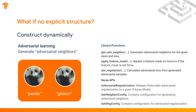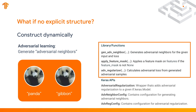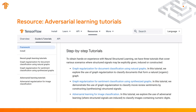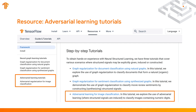In the Neural Structure Learning framework, there are a TensorFlow library and functions that you can use to generate adversarial neighbors. We also provide Keras APIs that you can use to enable easy-to-use end-to-end training with adversarial learning. If you are interested in the details of these libraries and APIs, please visit our website.